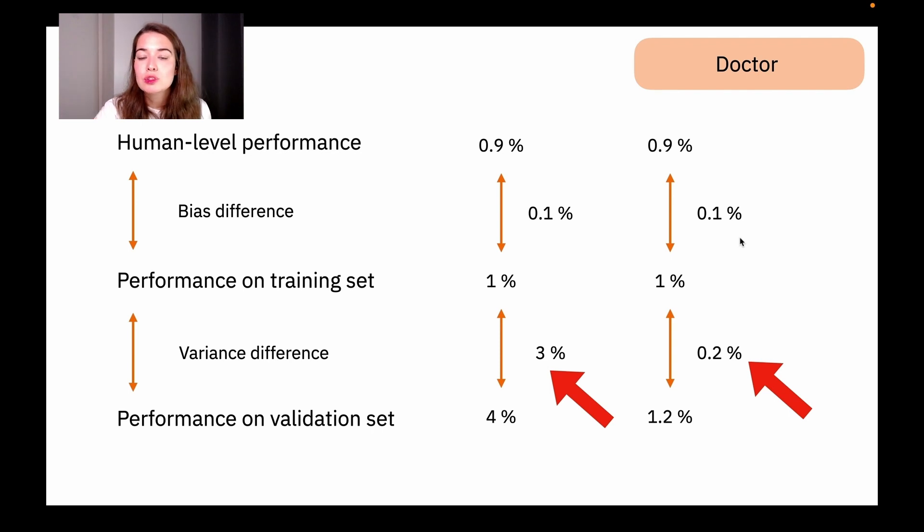So this is how choosing your human level performance would change what kind of solution you're going to come up with after this diagnosis level for your model to make it better and to make it perform at a more acceptable level.